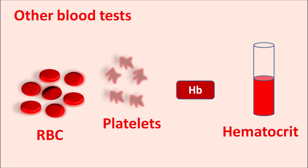Dengue virus can be detected by three types of tests. The NS1 protein test: if positive, it confirms dengue virus; if negative, dengue can be confirmed by IgM test. The serology test: IgM plays an important role — if positive, it indicates current dengue viral infection; if IgM is negative with IgG positive, it indicates a past infection. The molecular test using RT-PCR gives a more specific result and can identify the genotype; if positive, it confirms dengue infection; if negative, infection can be confirmed by IgM test. Hope you have enjoyed this video.